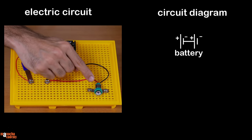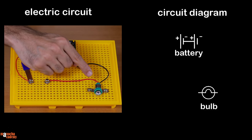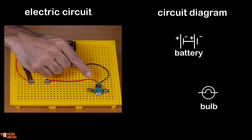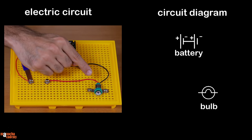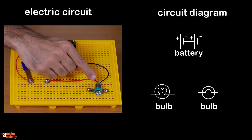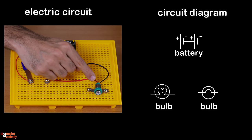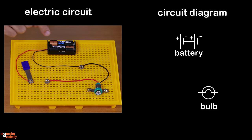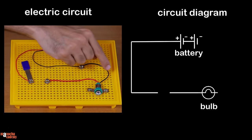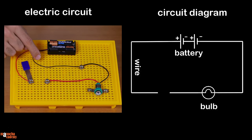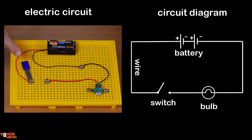A bulb is drawn using a symbol like this. Some books may use a different symbol for the bulb. The connecting wires are represented by simple lines. A switch is shown using this symbol which looks like a gate.